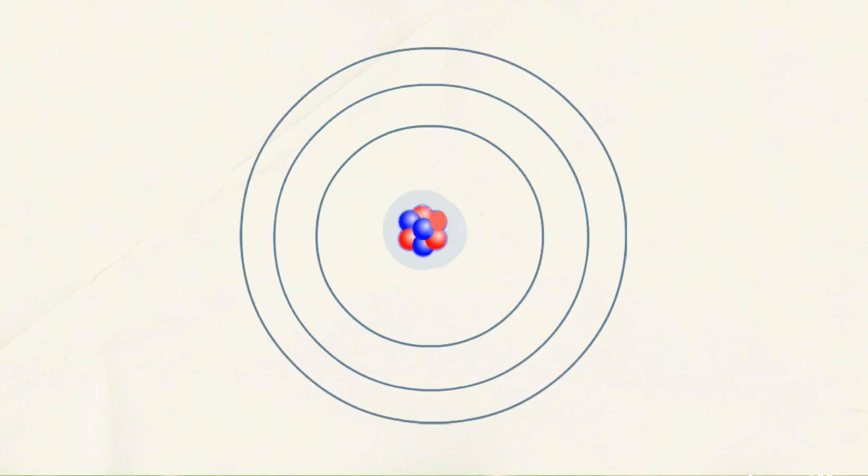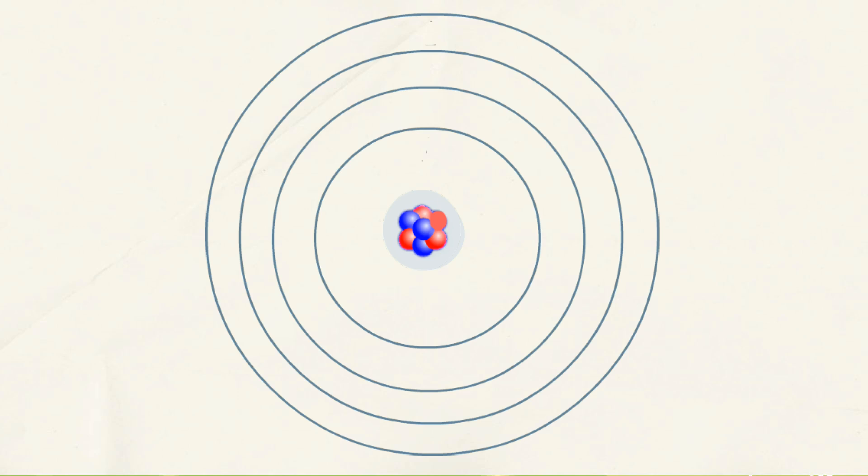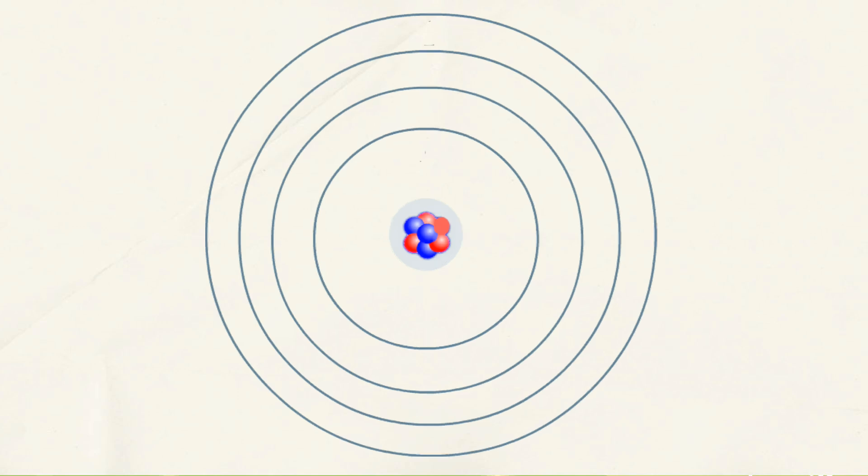Electrons will fill the shells from the lowest energy level, which is the nearest one to the nucleus. These energy levels are numbered outward, 1, 2, 3, and so on starting from nucleus.